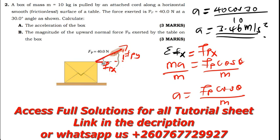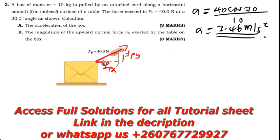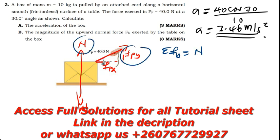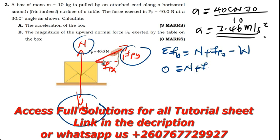For the normal force, it is perpendicular to the surface. The forces in the y-direction are: normal force pointing up, Fp y pointing up, and weight force pointing down. Since the object is not moving in the y-direction, the net force in y is zero. So: N + Fp y − weight = 0, meaning N + Fp sin(theta) − mg = 0.